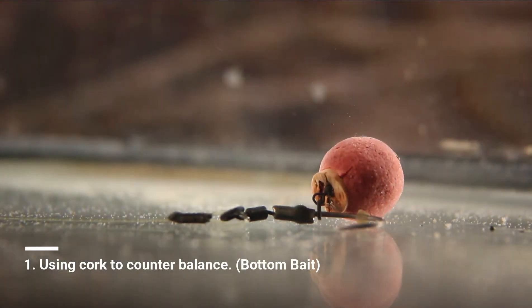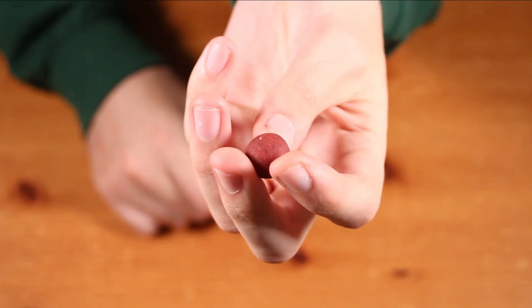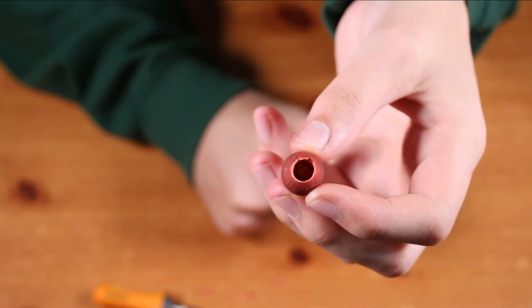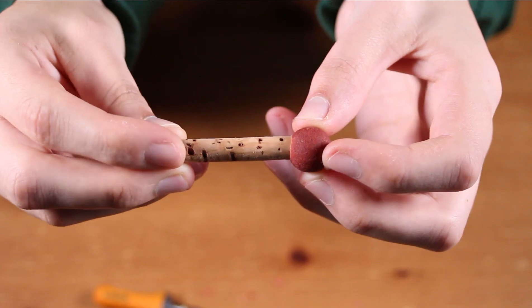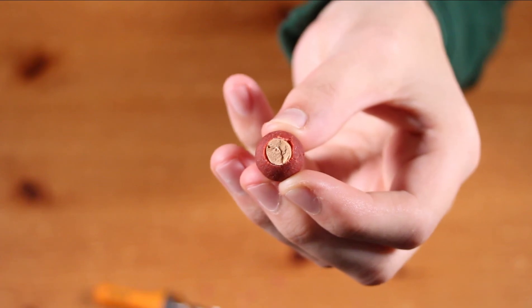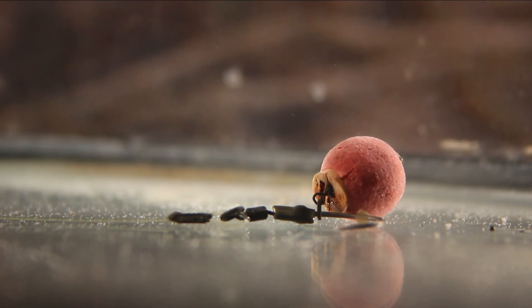Using cork to counterbalance against the Ronny rig. First take your chosen boilie and drill about halfway. Push the cork stick into the hole and cut off the remaining. There you have a bottom bait with extra buoyancy.